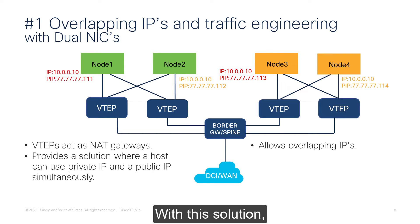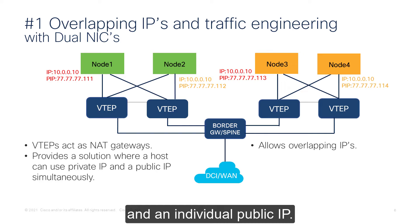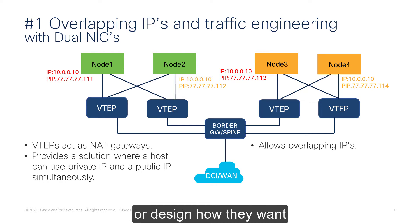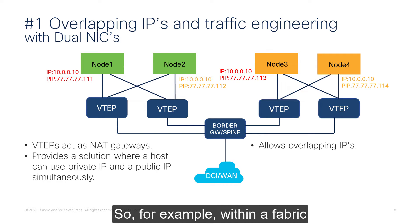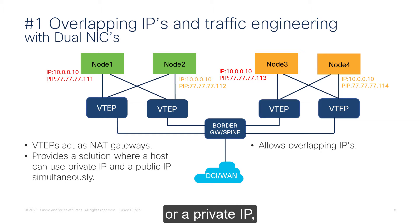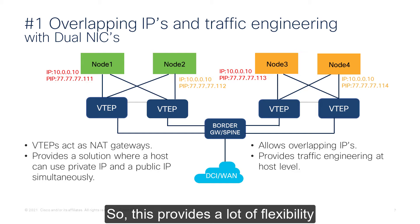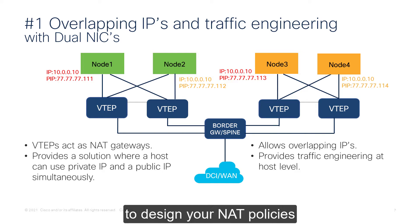With this solution, each node has an overlapping private IP and an individual public IP. A user can engineer or design how they want to use these IPs. For example, within a fabric, you could send traffic using a public IP or a private IP depending on the requirement. This provides a lot of flexibility on how you want to design your NAT policies and your traffic policies.